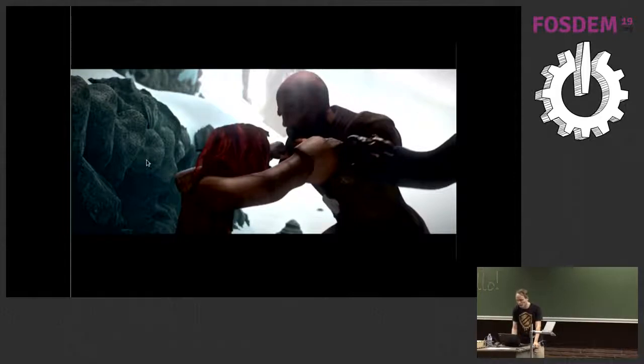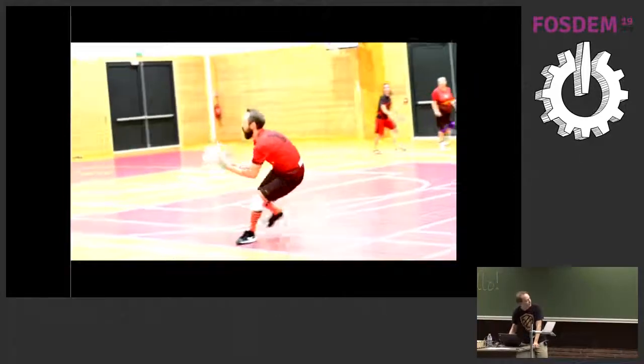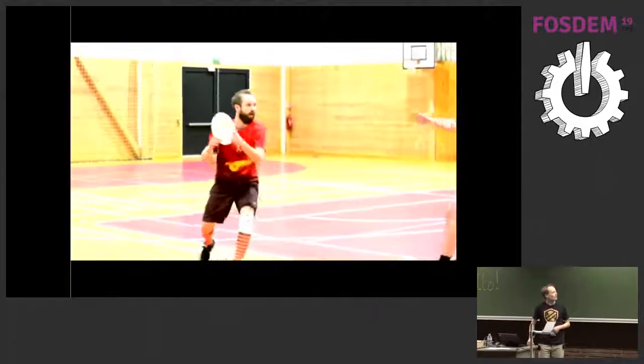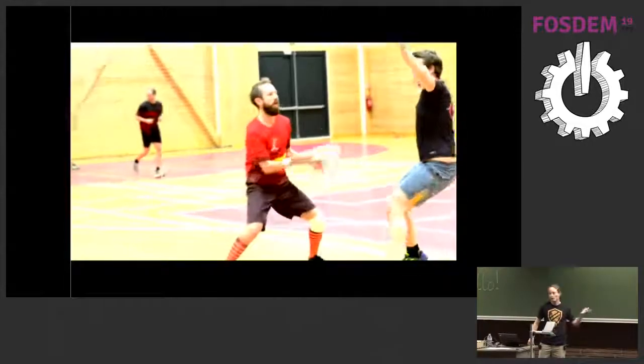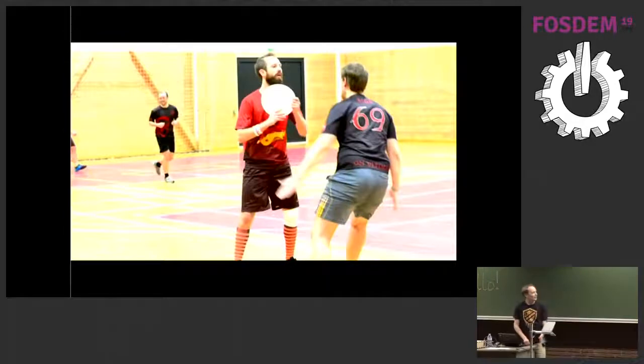We can take just two frames and interpolate very smoothly between them — the result looks like this. There are some issues; for instance, it has problems with occlusion. But it did get the motion right, and the background motion is hardly even visible. Remember, this is 50x slowdown, so this is fairly good. Looking at the original example with this algorithm — it's not so bad. There are some artifacts, especially if you know what to look for, but again, this is a hard sample.